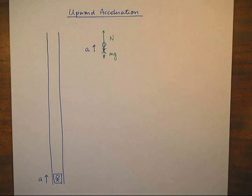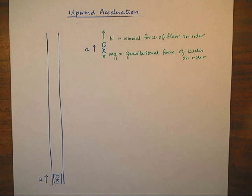According to Newton's second law, the net force on the rider is in the direction of his acceleration. This tells us that the normal force of the floor on the rider is larger than the person's weight.